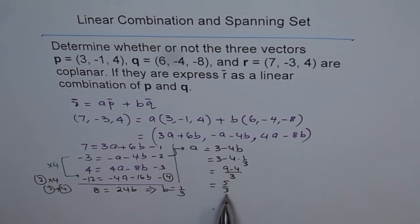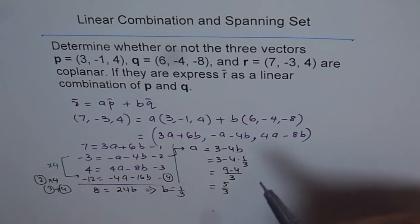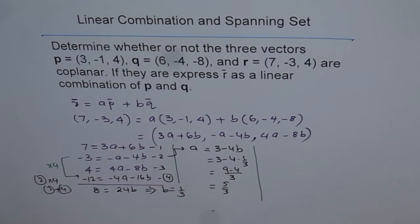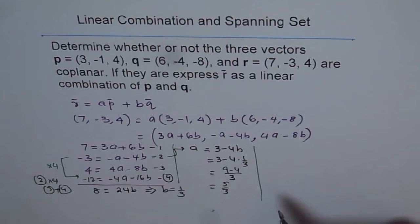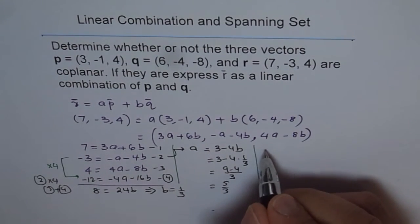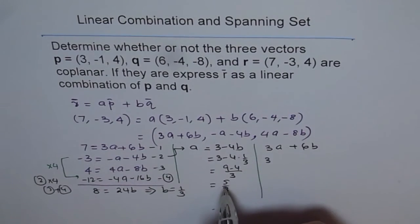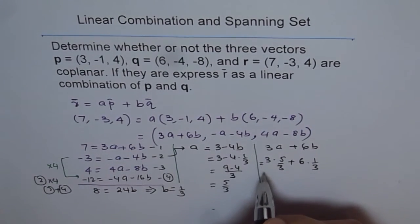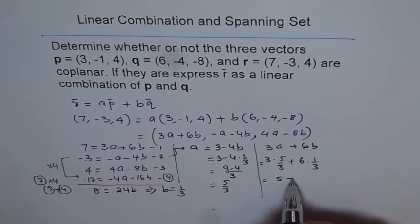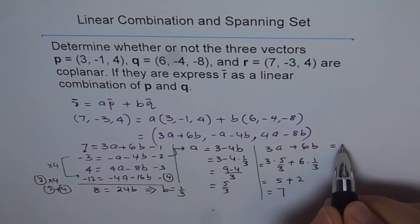Now we substitute A = 5/3 and B = 1/3 into the first equation and check. We compute 3A + 6B: 3 times (5/3) plus 6 times (1/3). The 3s cancel, giving 5 + 2 = 7. That is equal to 7 as expected, so the solution checks out.